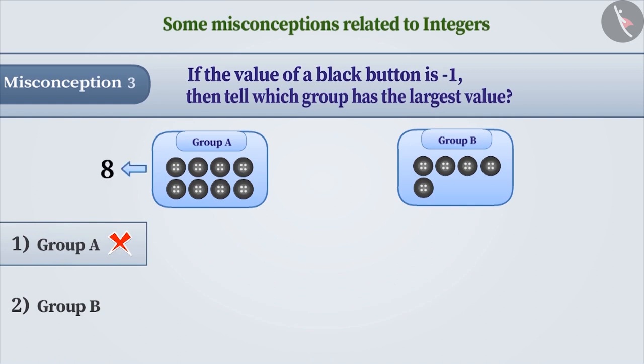Since group A has eight black buttons and each has a value of minus 1, the value of group A is minus 8. Similarly, group B has five black buttons and each has a value of minus 1, so the value of group B is minus 5. To find out which group has a larger value, we need to compare the values of these two groups.